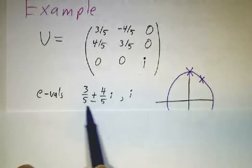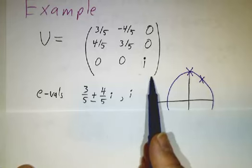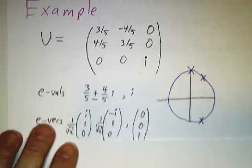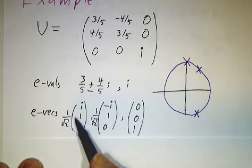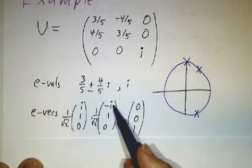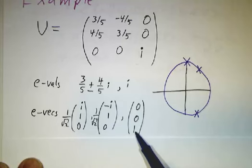The eigenvalues are 3 fifths plus or minus 4 fifths i and i. The eigenvectors are i10, you can normalize it by dividing by root 2, minus i10 and 001. Any two of these are orthogonal.